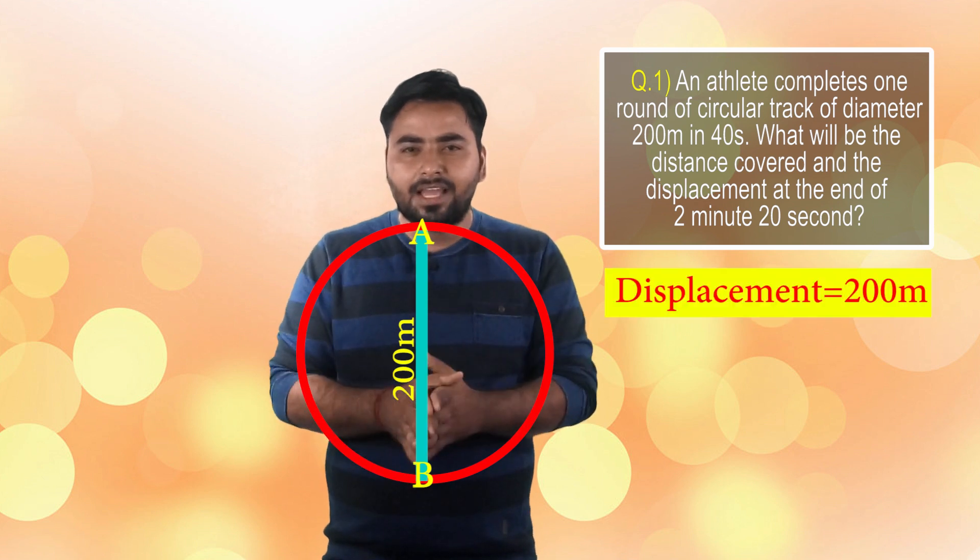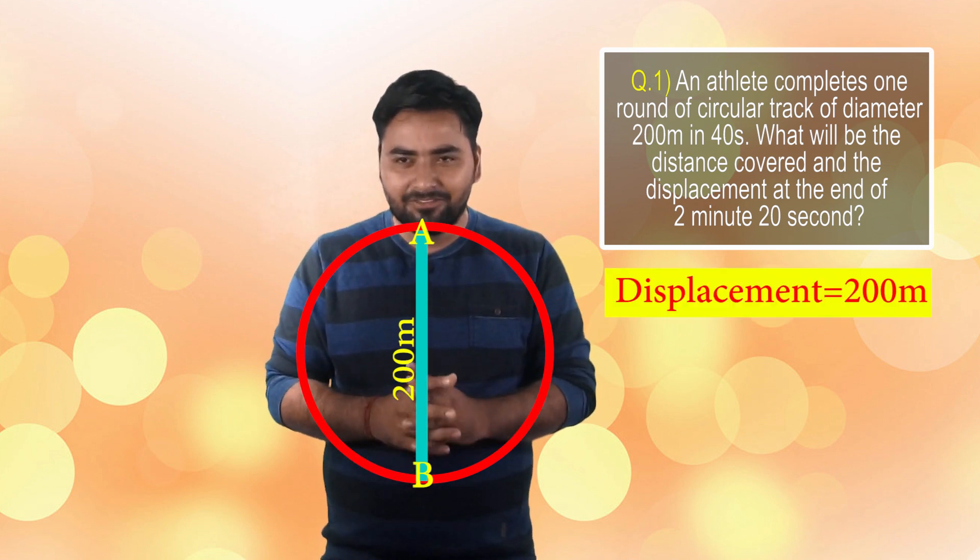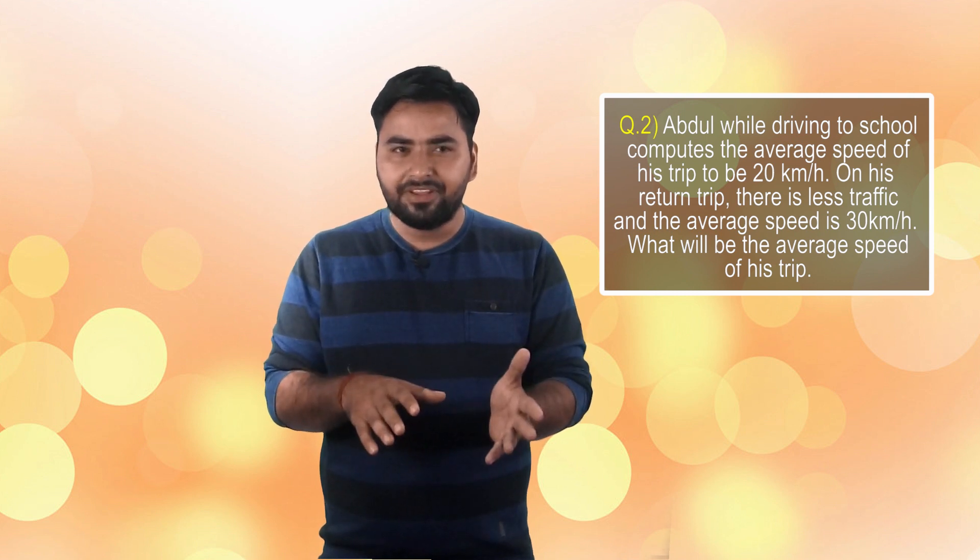The second question: Abdul, while driving to school, computes the average speed of his trip to be 20 km per hour. On his return trip along the same route, there is less traffic and the average speed is 30 km per hour. What will be the average speed of Abdul's trip?